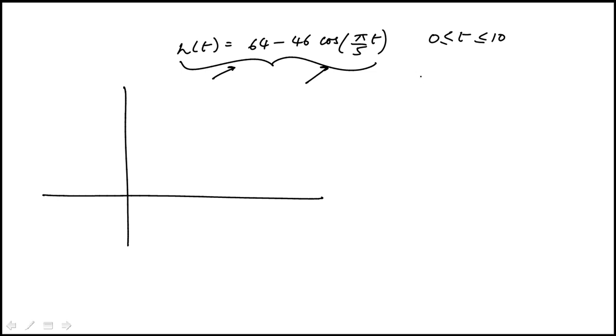For example, when t is equal to 0, cosine of that 0 would be 1. In that case, the initial height would be 64 minus 46, which is 18. And then as the cosine function, as t goes up, it's going to go through a maxima and then come down.